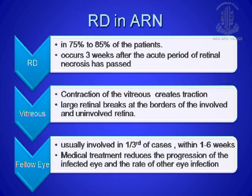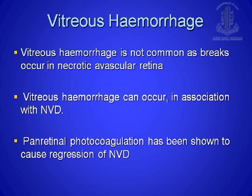Retinal detachment is seen in around 75–85% of patients, so you know how dangerous this disease can be, and it occurs almost after three weeks. So within three weeks, that is the golden period we have to treat the patient. What happens to the vitreous? It contracts because of the severe inflammatory changes, and large retinal breaks develop between the involved and uninvolved retina. Usually you will see the fellow eye getting involved if it is not treated medically — generally within 1–6 weeks. Vitreous hemorrhage can occur but is quite uncommon because the breaks are in the necrotic avascular retina.